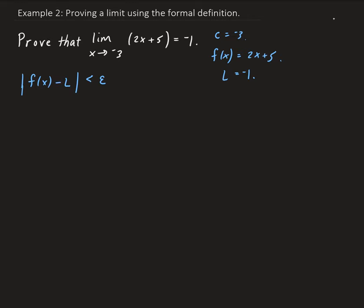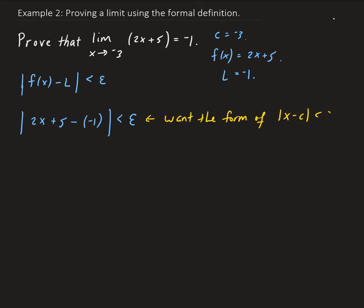So we have the absolute value of 2x plus 5 minus negative 1, since L is negative 1. From here, we want to get to the form of x minus c less than delta, corresponding to that delta neighborhood. So we have the absolute value of 2x plus 6, less than epsilon.